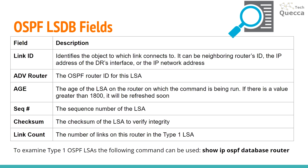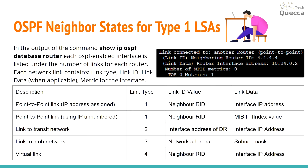To examine type 1 OSPF LSAs, the following command can be run on the router: 'show ip ospf database router'. In the output of this command, each OSPF enabled interface is listed under the number of links for each router, as we will see in the example. Each network link contains a link type — for example point-to-point — link ID, link data, and metric for the interface.